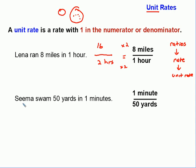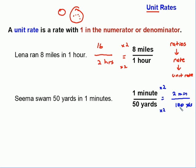Let's take one more example. SEMA swam 50 yards in one minute. Is that a unit rate? Yes, it is, because we have one in the denominator — for every one minute, she swam 50 yards. If we wanted to know how far she swam in two minutes, we multiply by two to get from one to two, and also multiply the 50 by two to get 100 yards. So in every two minutes, she'll swim 100 yards. And those are unit rates.